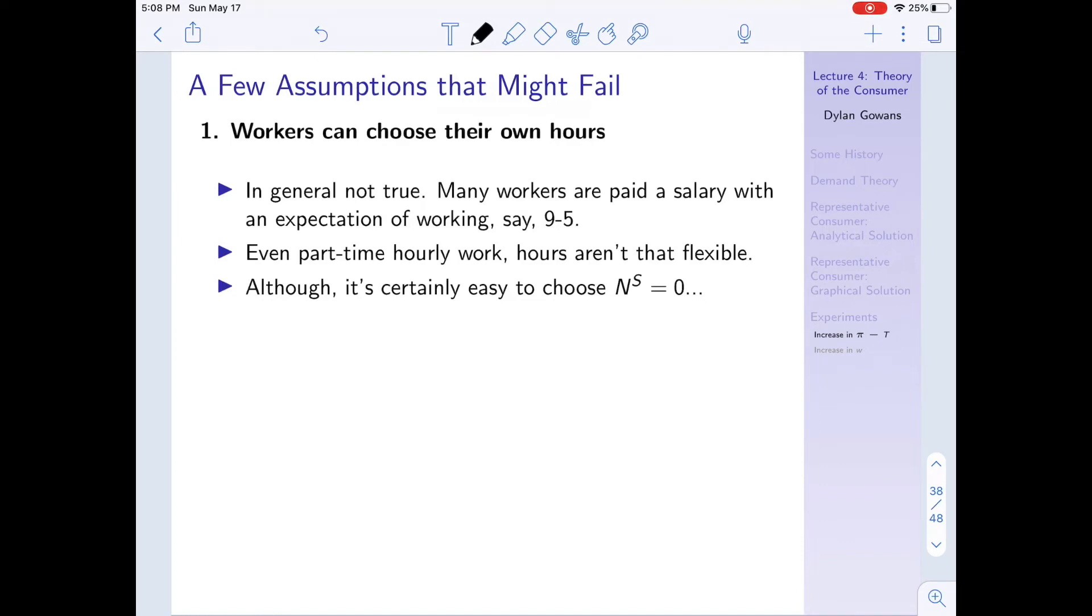In general, many workers are paid a salary with an expectation of working, say, nine to five. Even part-time hourly work, hours aren't that flexible. I mean, I worked in retail for many years, and even though I was part-time and so had some flexibility in the amount of hours I worked, there wasn't that much, there was an expectation that I worked so many hours. And even if I wanted to work more, often those hours weren't available. So even then it was pretty inflexible. And even for workers who can choose their own hours, say academics or lawyers, again, there's often an expectation of working however many hours. And often your wage doesn't directly depend on how many hours you work, so it's not really a great example of this model.